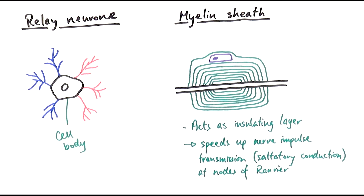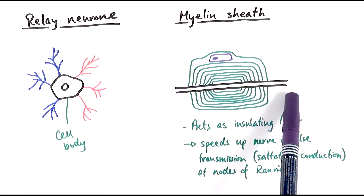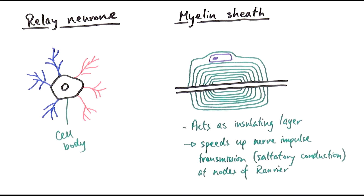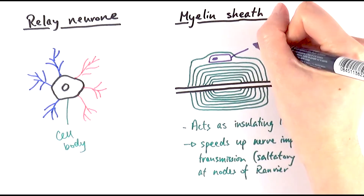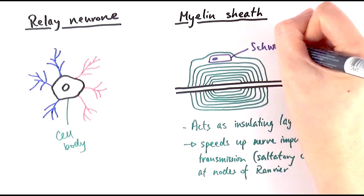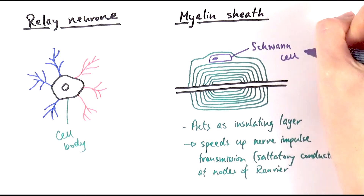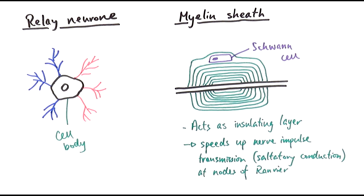The myelin sheath shown here is a layer of plasma membranes — you can also describe it as a layer of lipids — which insulates the neuron. This insulating layer allows saltatory conduction to occur, speeding up nerve impulse transmission at the nodes of Ranvier. For more detail on this you can watch the action potential video. You also need to know about the cell that produces the myelin sheath: the Schwann cell, named after the scientist who discovered it.